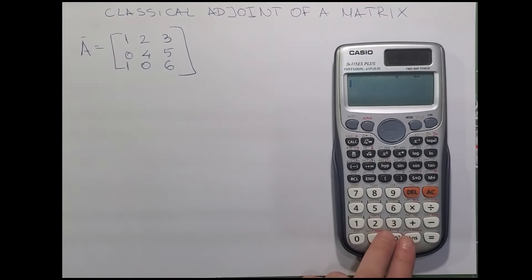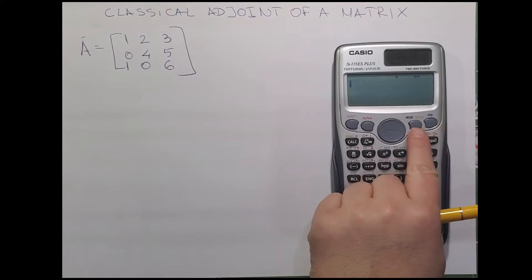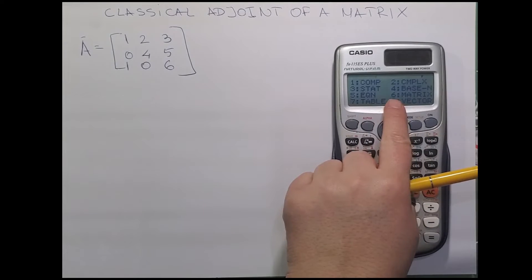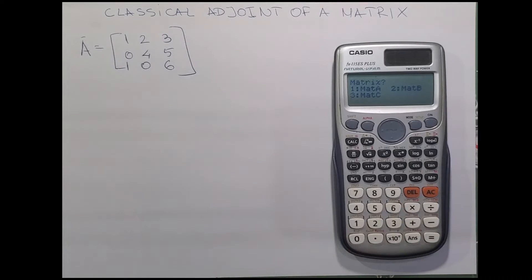Now on the calculator, we press MODE button in order to enter the matrix menu. I'll press 6 for matrix, then 1 for matrix A, and 1 again for 3 by 3 matrix.